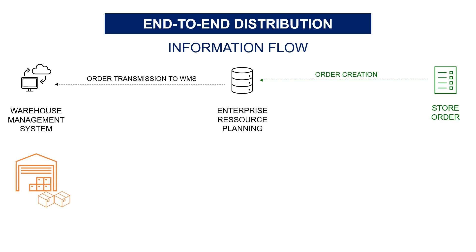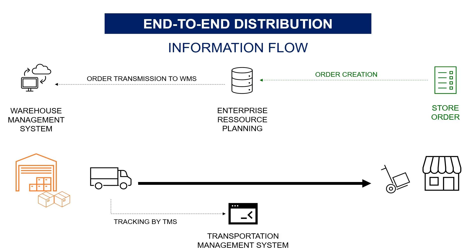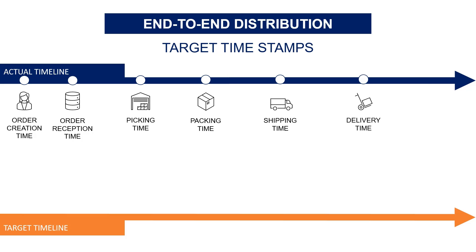Everything starts from the order creation and transmission. As soon as it is received and available in the WMS, the order can be prepared by the warehouse preparation team — starting from picking and ending with packing. Then, when the pallet is ready for shipping, the transportation team takes ownership of the shipment from the time it leaves the warehouse until the store delivery. Another timestamp can be captured when the goods are received by the store team in the system.